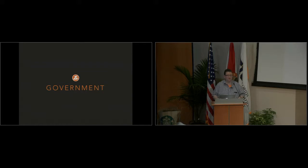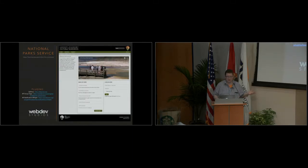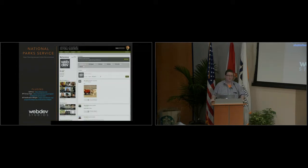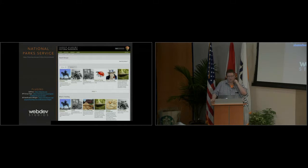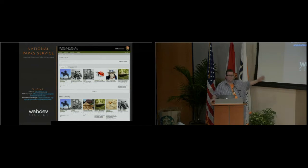WordPress's presence in government also relies a lot on internal networks — the network you don't see. One example is the National Park Service, built by a company called Web Dev Studios. It's an internal social network just for employees. They use standard BuddyPress features like activity streams and groups, bbPress for forums, and a group tag plugin so they can better archive and search groups.